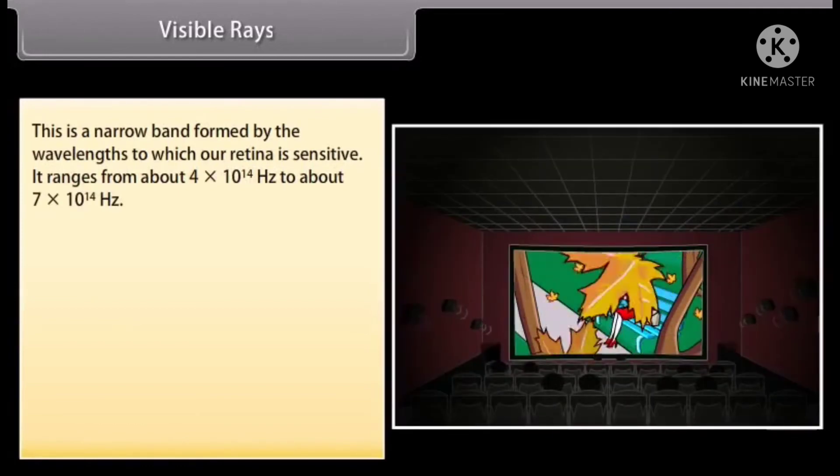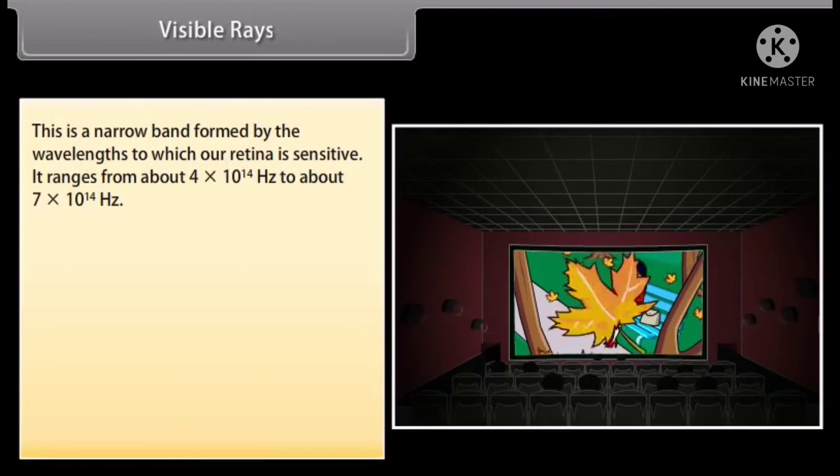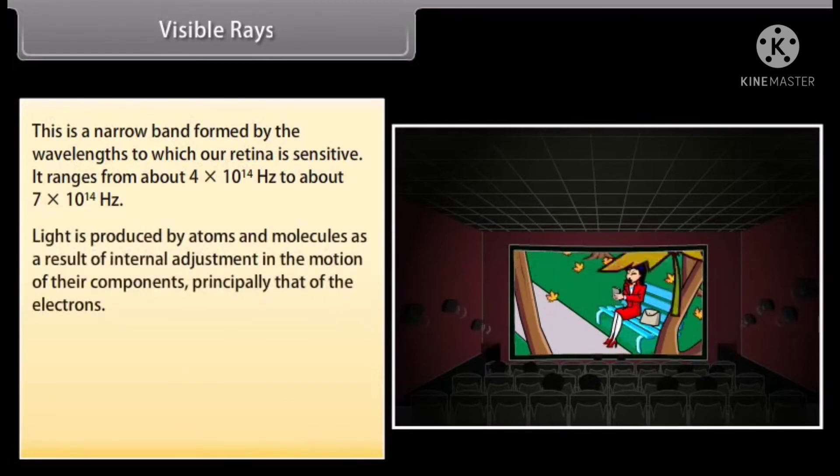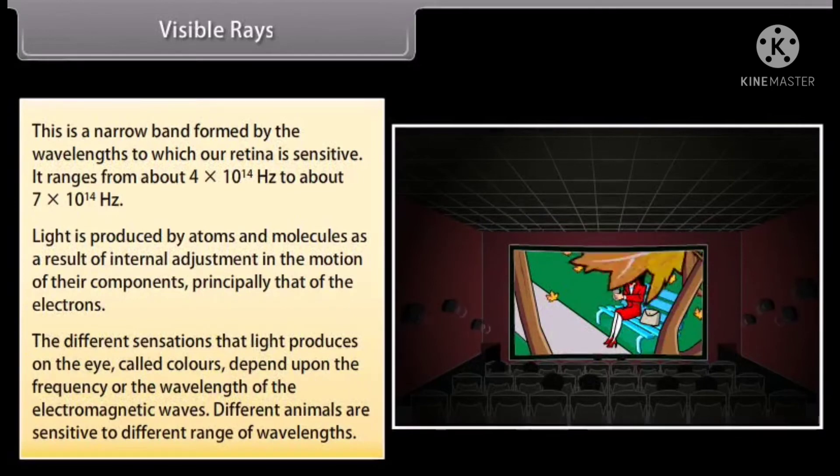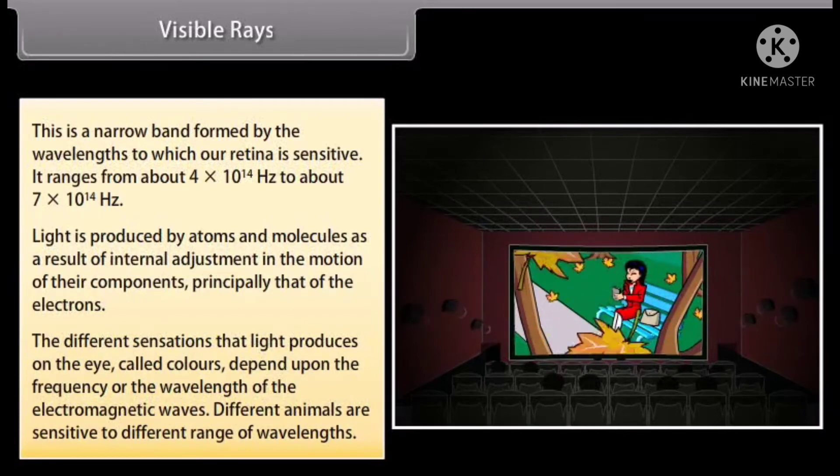Visible light: This is a narrow band formed by the wavelengths to which our retina is sensitive. It ranges from about 4 into 10 raised to the power 14 hertz to about 7 into 10 raised to the power 14 hertz. Light is produced by atoms and molecules as a result of internal adjustment in the motion of their components principally that of electrons. The different sensations that light produces on the eye called colors depend upon the frequency or the wavelength of the electromagnetic waves. Different animals are sensitive to different range of wavelengths.